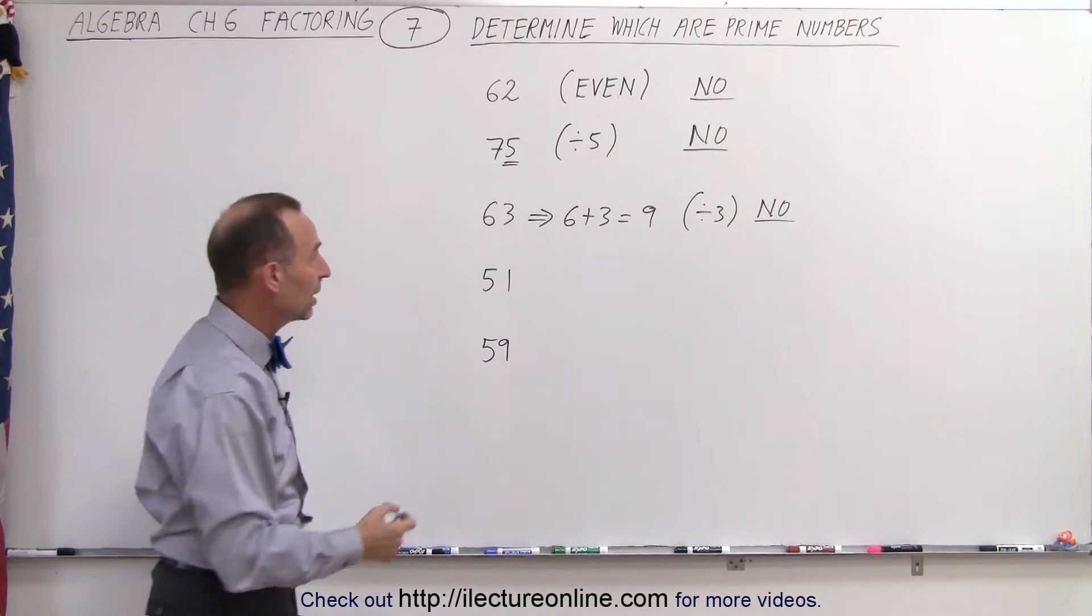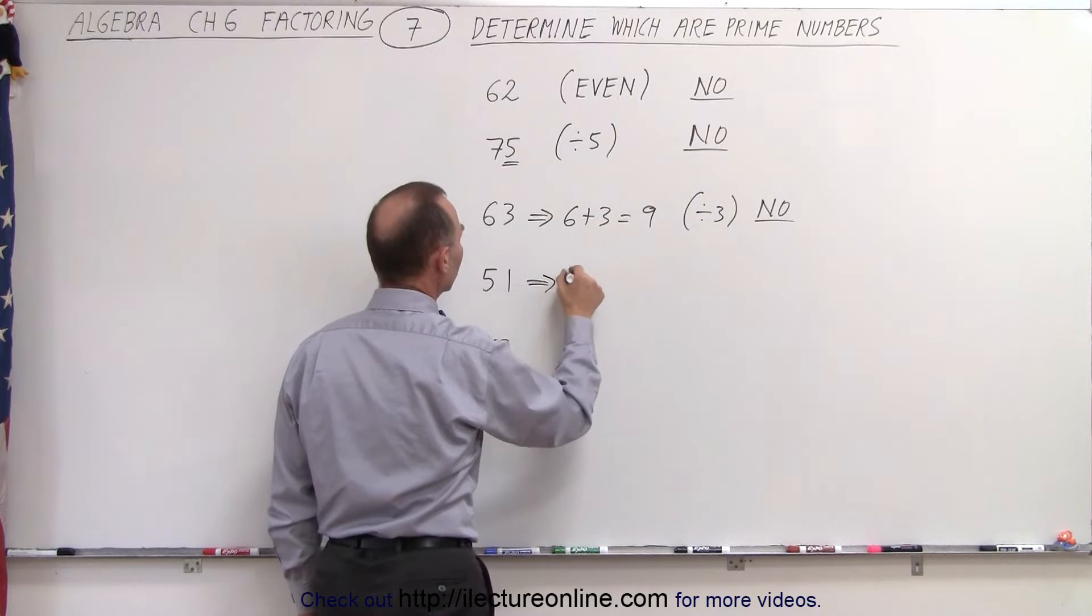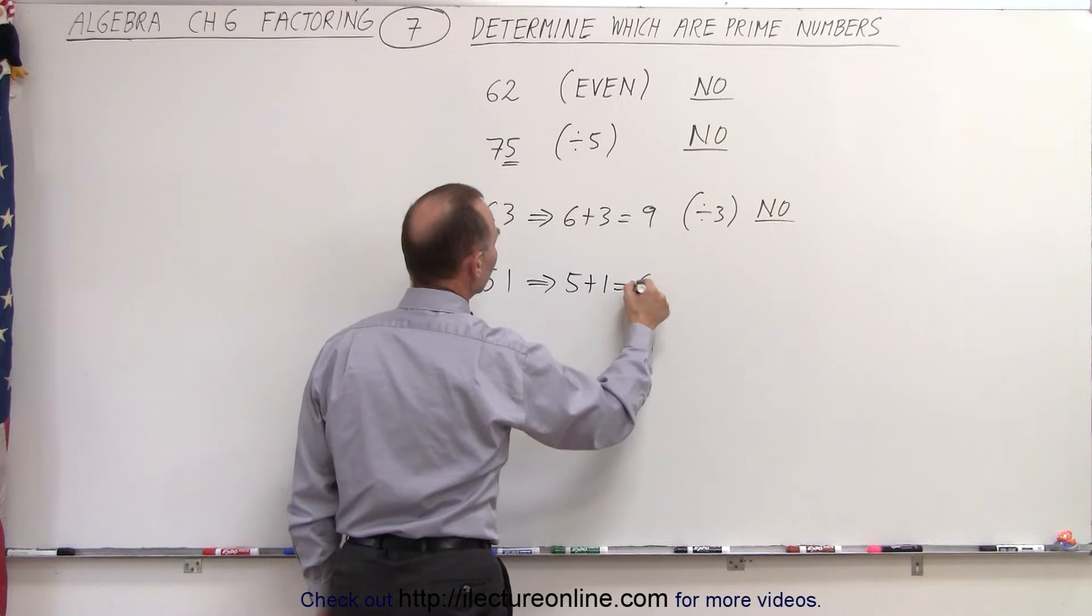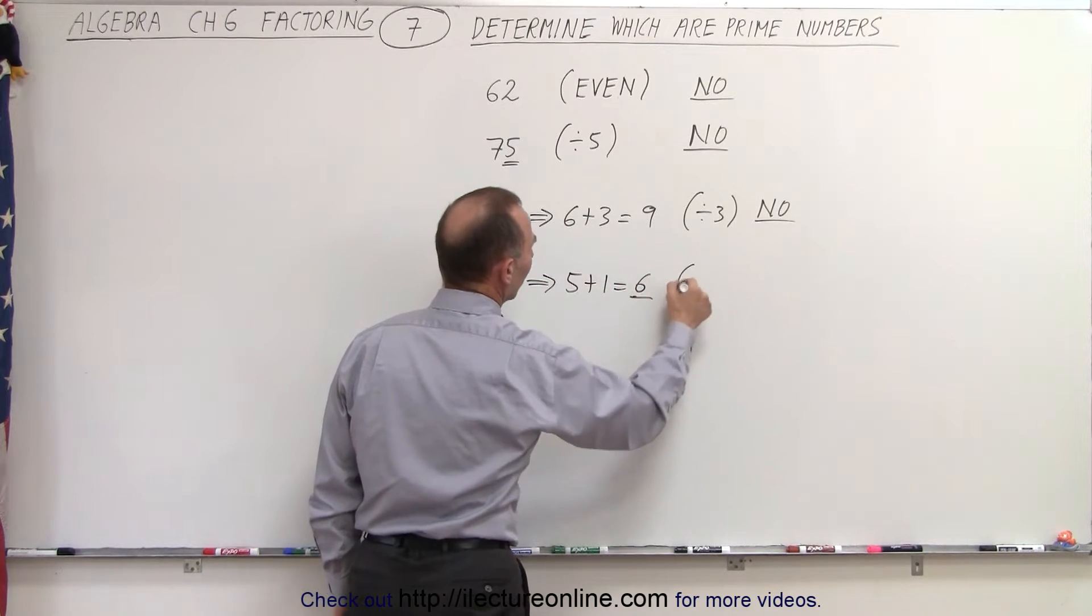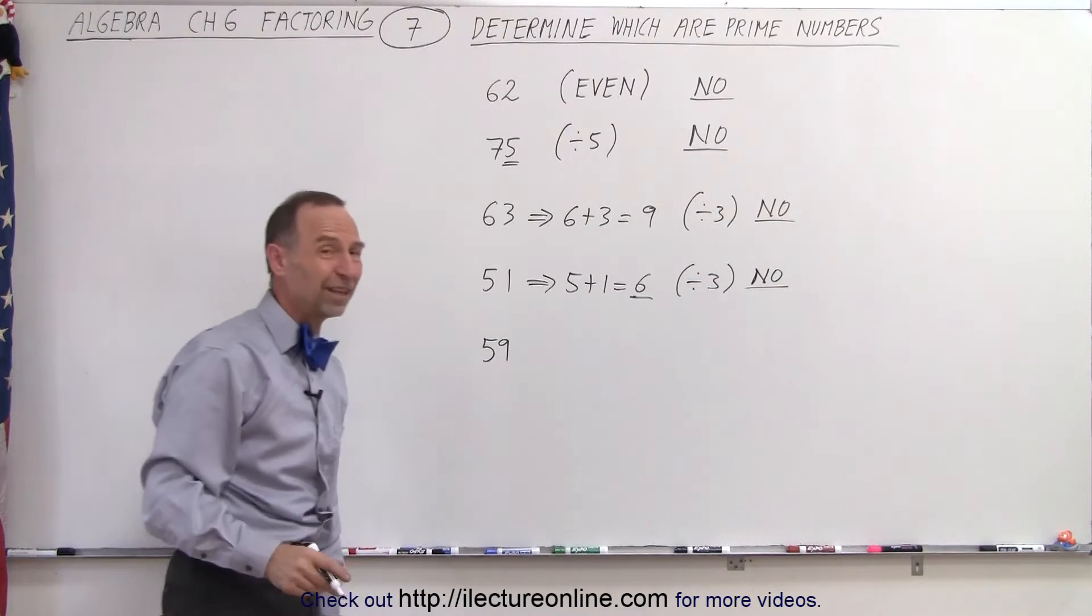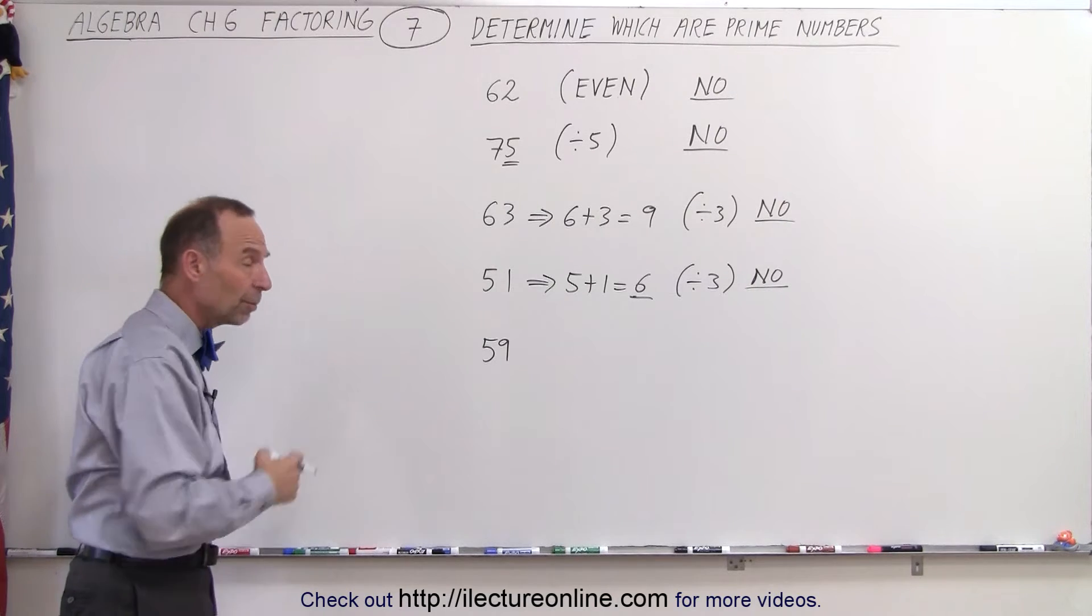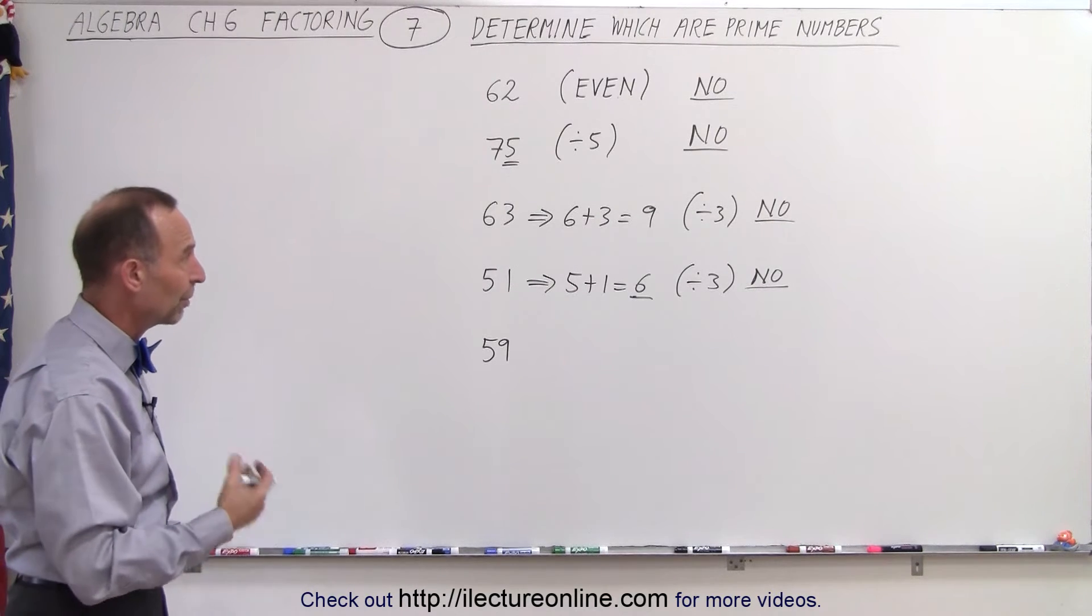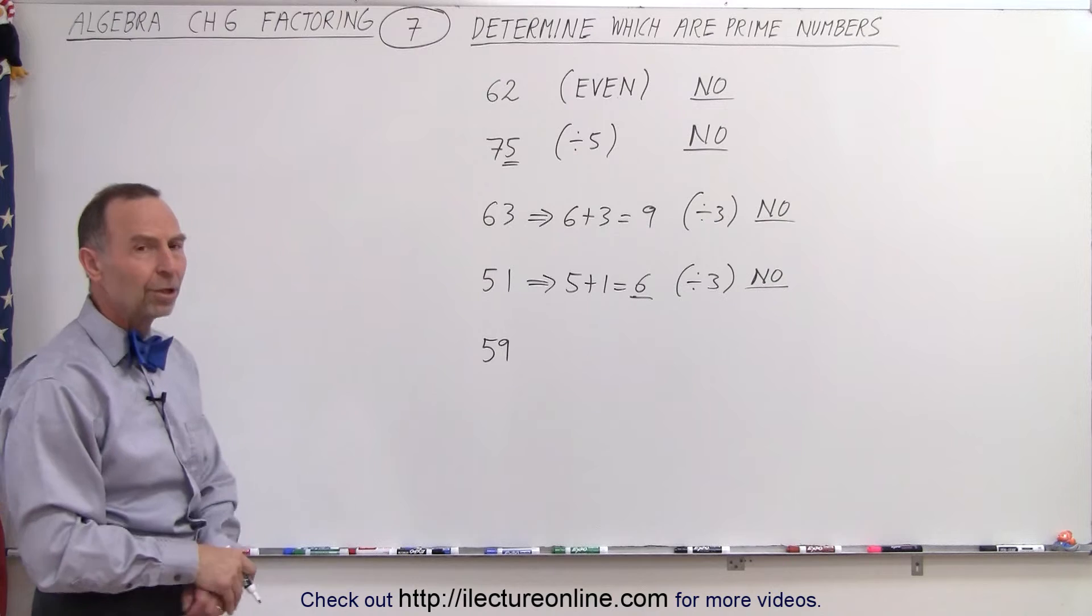51, we can do the same thing, we can add the two digits together, 5 plus 1 equals 6, since 6 is divisible by 3, again we can say not a prime number. So you can see that very quickly, on most numbers like that, you can determine if it's a prime number or not. What about the number 59?